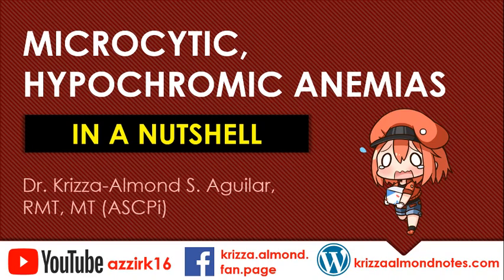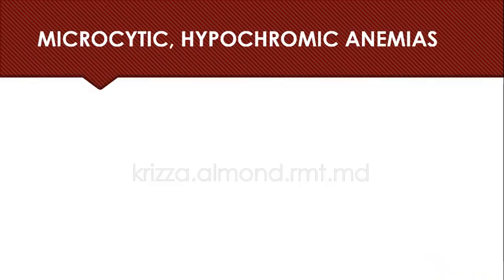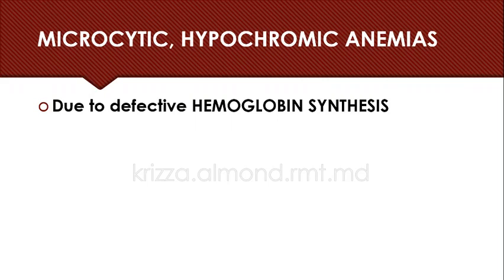Microcytic hypochromic anemias develop due to defective hemoglobin synthesis. When hemoglobin synthesis is affected, hemoglobin concentration will decrease, and if the hemoglobin concentration is decreased, that will affect the maturation of our red blood cells, giving us microcytic hypochromic types of red cells.